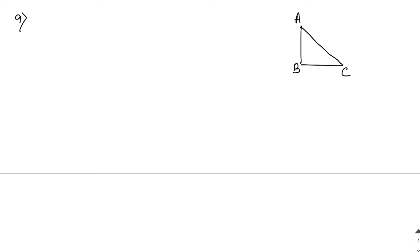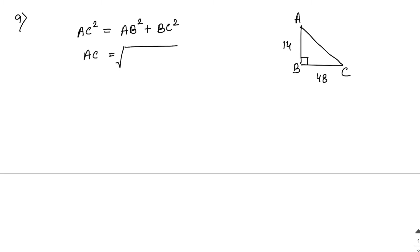Sum number 9: In right-angle triangle ABC, angle B equals 90 degrees. If AB equals 14 cm and BC equals 48 cm, find AC. Using the Pythagoras theorem: AC squared equals AB squared plus BC squared, so AC equals the square root of 14 squared plus 48 squared.